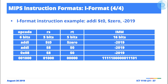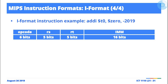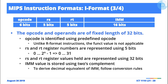The immediate value is a constant — it's a number. You'd identify it by knowing the format of an I-format instruction. If you look at the stream of 32 bits representing the instruction, the last 16 bits are reserved for the immediate value or constant. That's how you know — for I-format instructions, the last 16 bits are the immediate value.